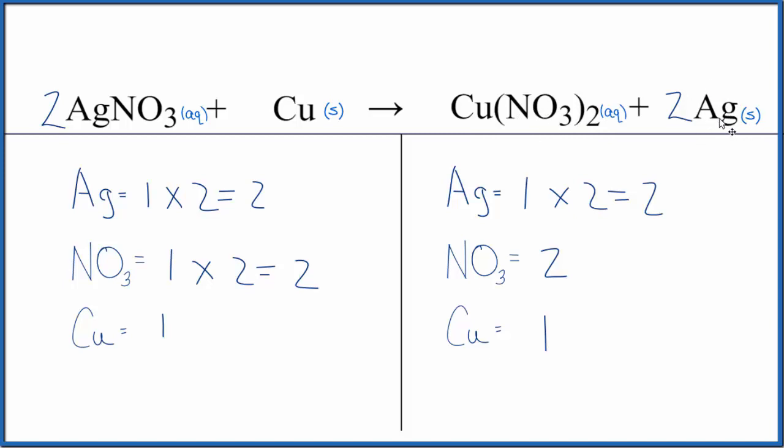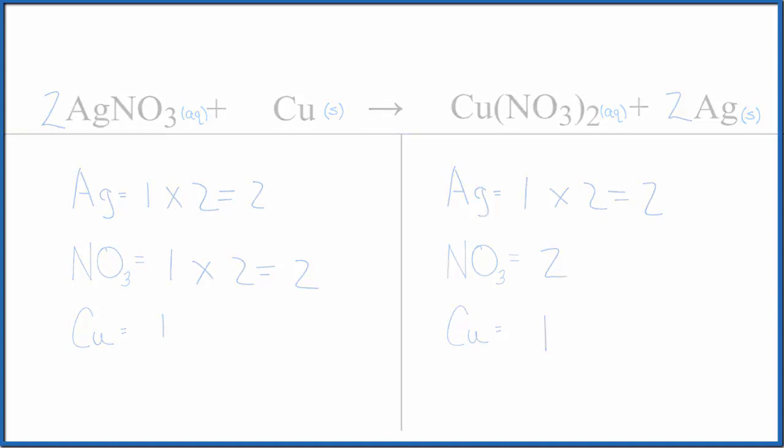This is Dr. B with the balanced equation for AgNO3 plus Cu. This is silver nitrate plus copper. The type of reaction? Single displacement. Do note, this would also be a redox reaction because silver and copper, they change their oxidation states. Thanks for watching.